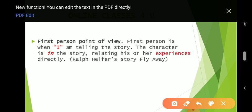First person point of view: the first person is when 'I' am telling the story. The character is in the story, relating his or her experiences directly. He is inside the story, he is part of the story, and uses first person pronouns for himself.